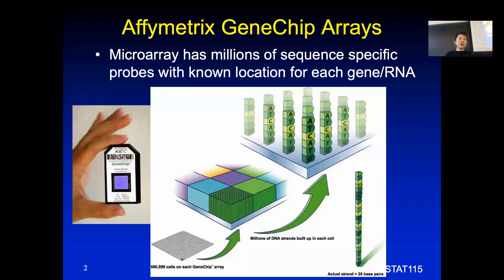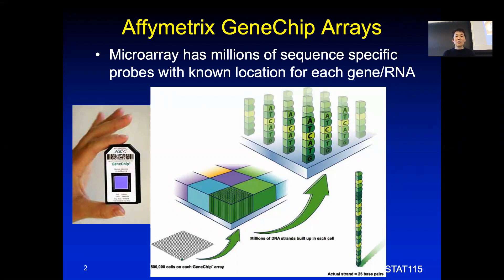Over the history, there are actually many different types of arrays invented. We're only going to talk about one type which is from a company called Affymetrix. This technology was invented at around Stanford and the Bay Area around 1995, and it became very popular in the early 2000s. Later on, high throughput sequencing came around, and nowadays nobody's really using Affymetrix arrays anymore, but a lot of the algorithms developed for bioinformatics are very applicable for other questions as well. It's a good starting point for when statisticians or biostatisticians really started to play an important role in computational biology.